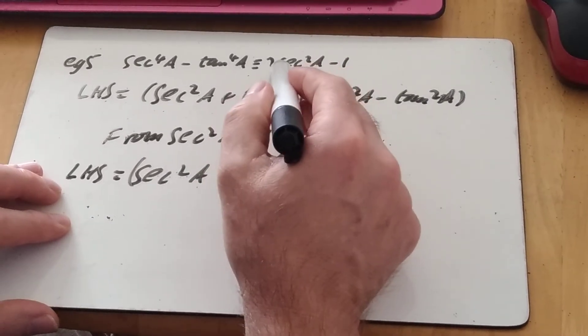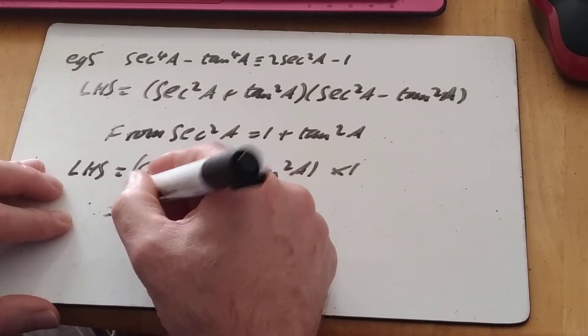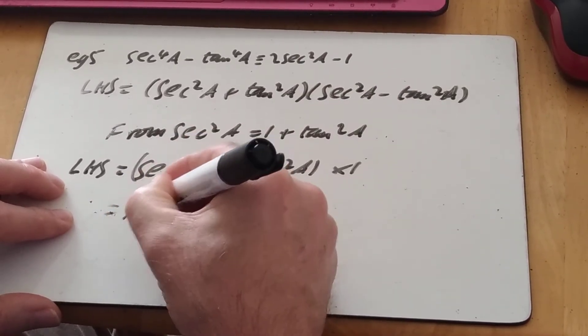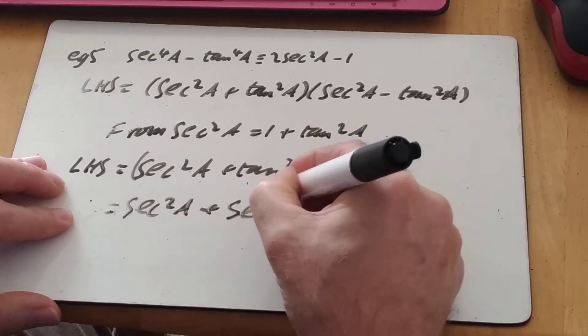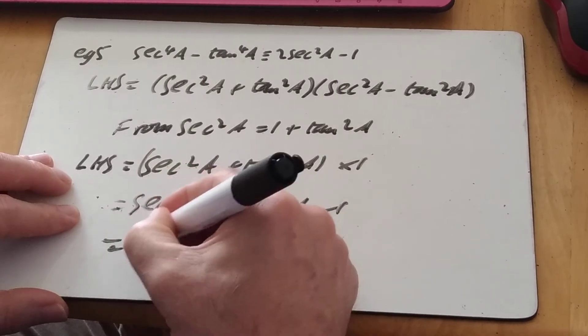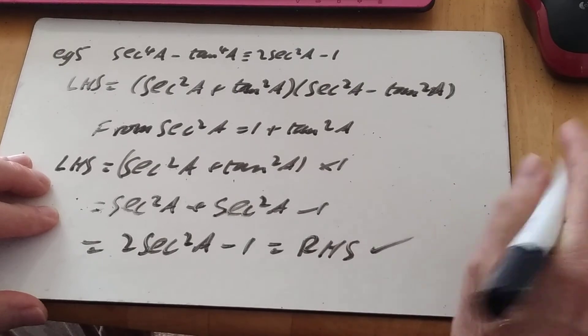What do I need the right-hand side to look like? I need it to look like 2 sec squared minus 1. So what I don't need is the tan squared. So I can use the same identity to say that tan squared is sec squared a minus 1. And I've got my 2 sec squared which will be right-hand side. And that's it.